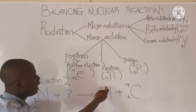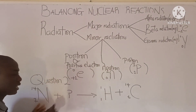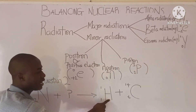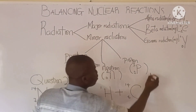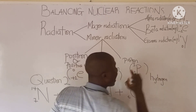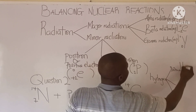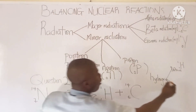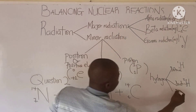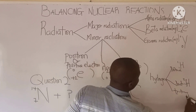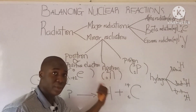How do we solve this? Here I see 1 and 14. Let's identify the elements: this is nitrogen-14, this is hydrogen, and this is carbon-14. Hydrogen can exist in various isotopic forms. The first isotope is called protium, with symbol H-1-1. The other isotope is deuterium, H-2-1, and lastly tritium, H-3-1. In this question, the isotope used is protium, H-1-1.